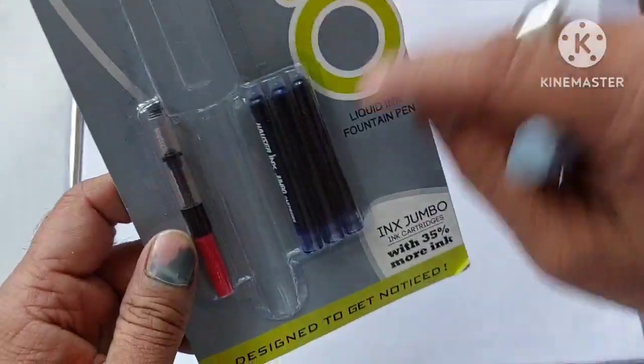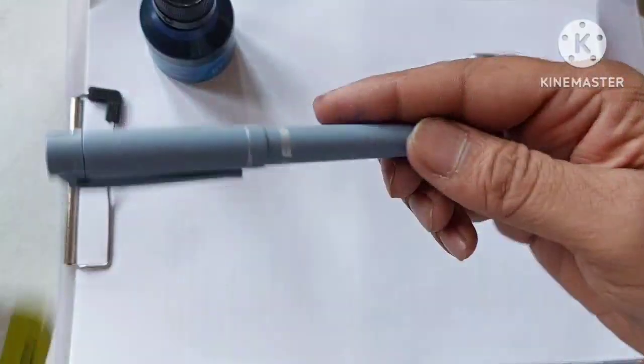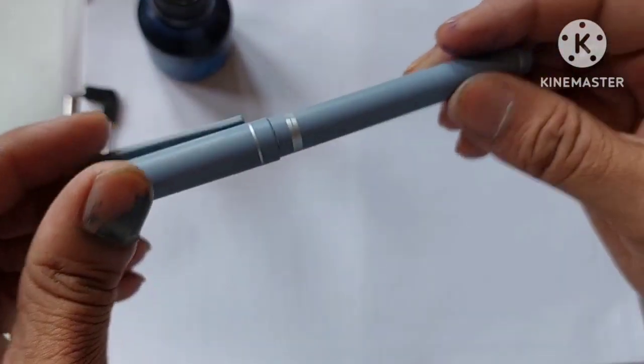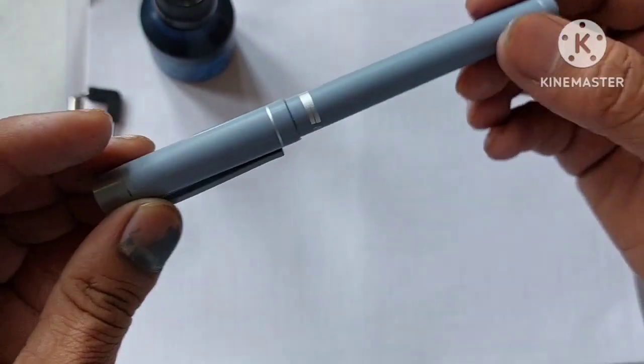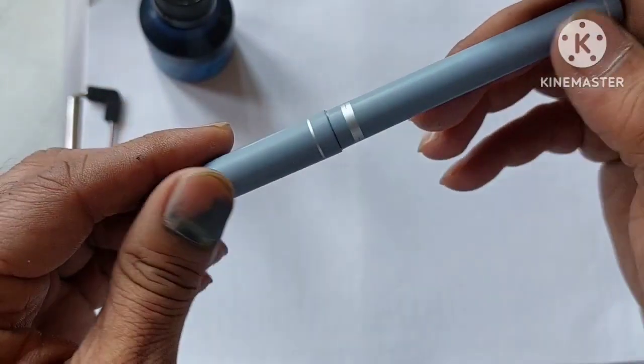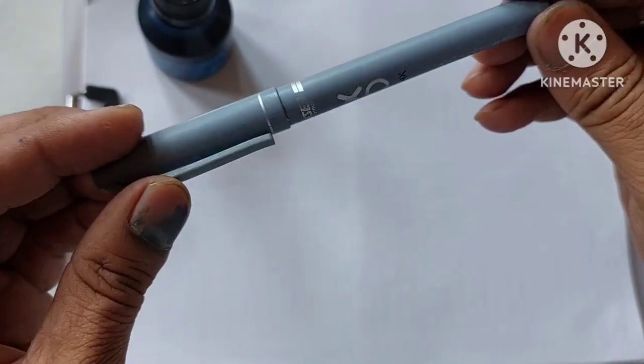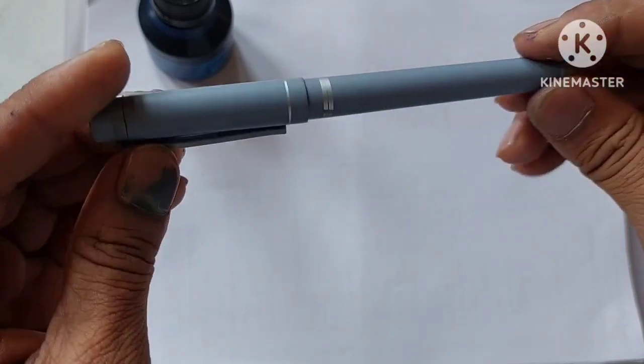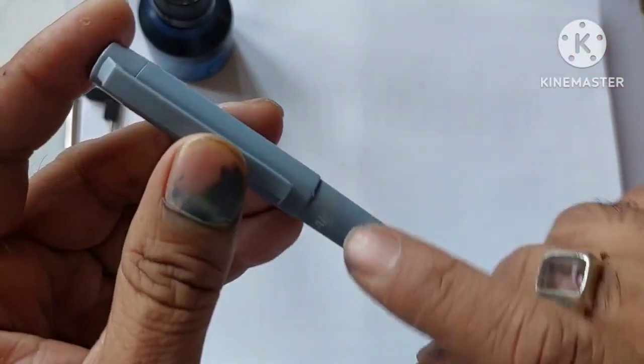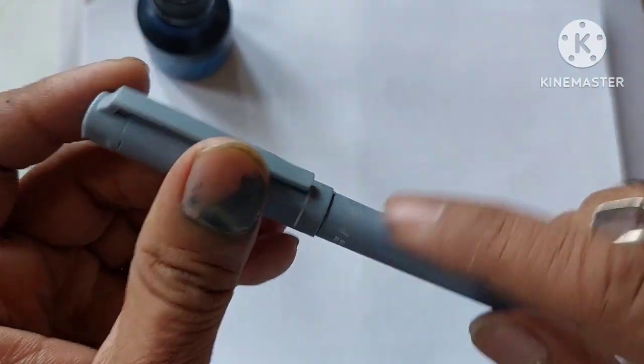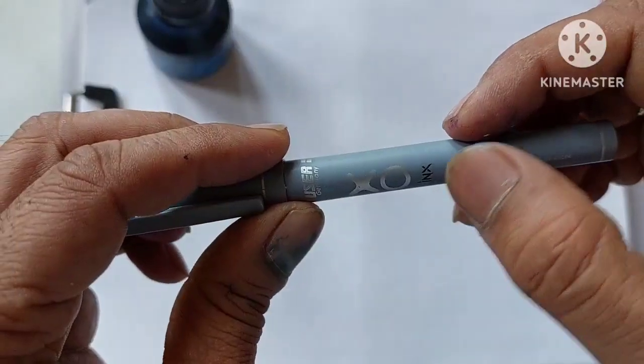So I am not going to remove these cartridges and converter. I just want to use and see this pen. So this pen comes in a matte finish with this grey color or ash color, same body as that of the ball pen of the same brand and Hauser printed on the barrel, EXO and inks.